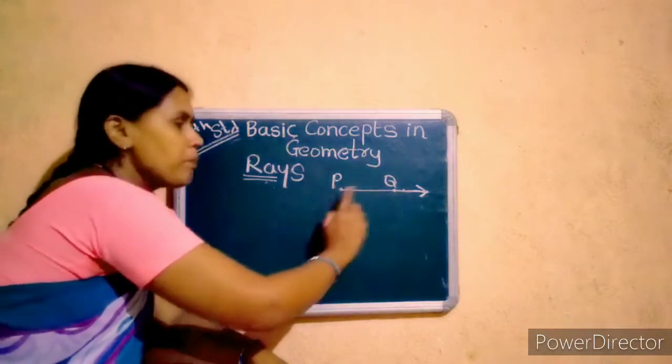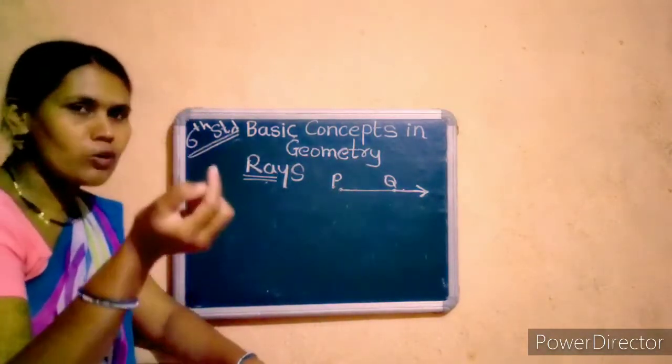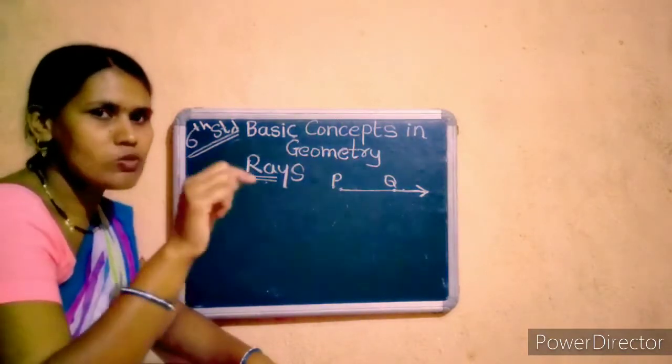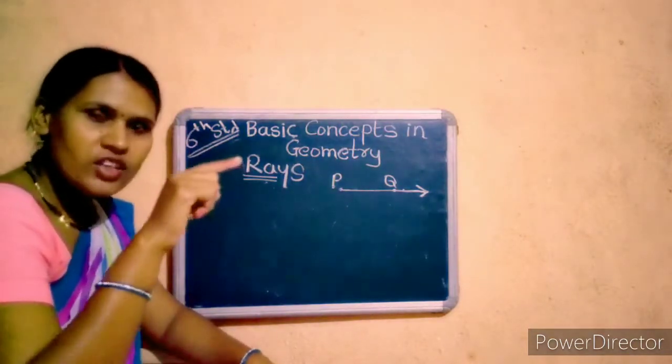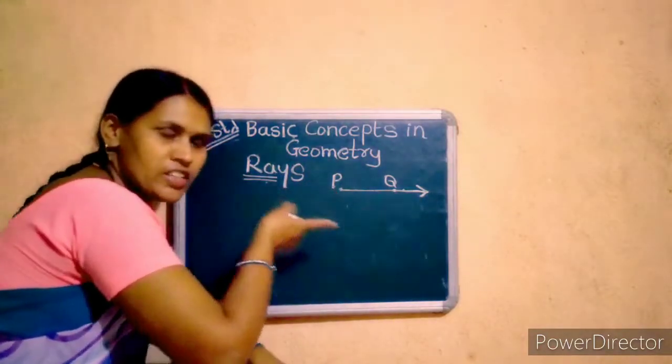That's ray. Ray is part of line. And ray starts from one point and goes in one direction forward.